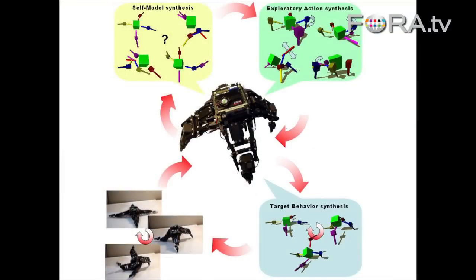This robot needs to learn how to walk. It could do random trial and error — just turn the knobs and guess its way to make the robot move forward. But an alternative is to do a kind of systematic exploration. So how does this robot work? It begins by making a random motion, randomly moving the motors.